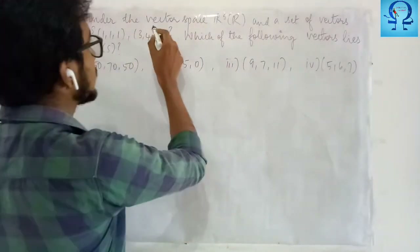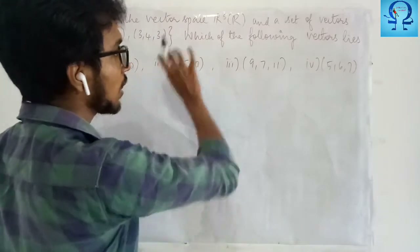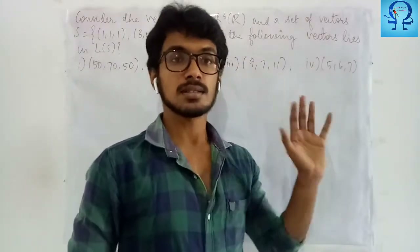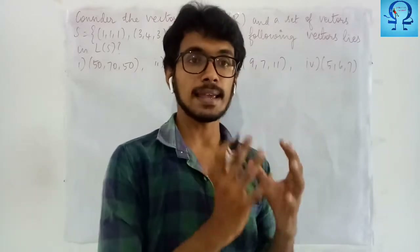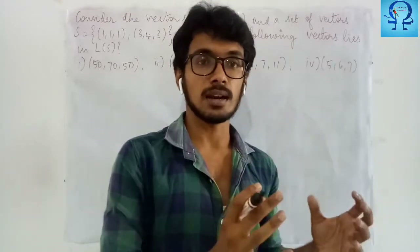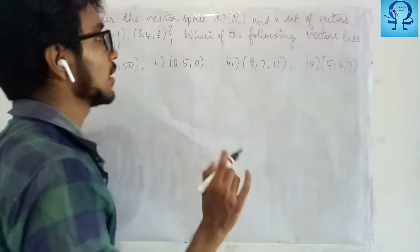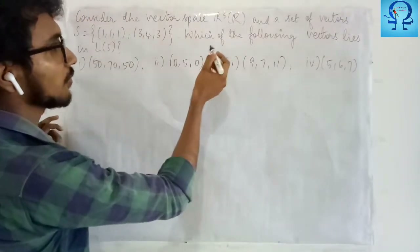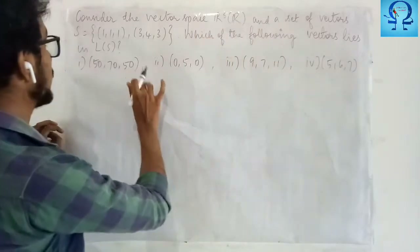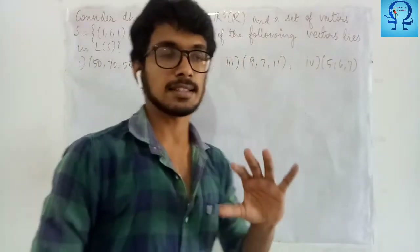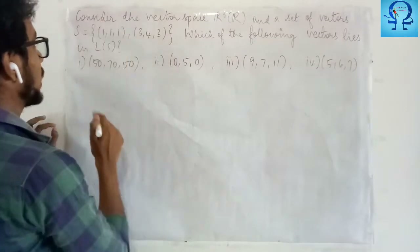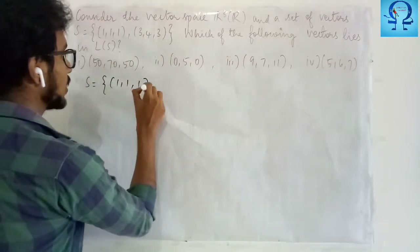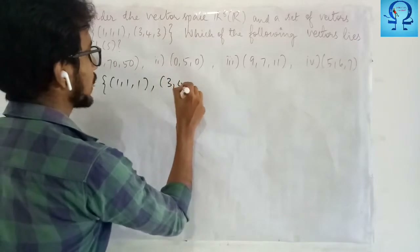We are asked to consider the vector space R3 over R. Scalar multiplication and vector addition are not specified, which means we are taking them in the usual sense. We are given two vectors and asked to find out which of the following vectors lies in the span of this set. Let us try to find what is the span of this set, given S is the set consisting of these two vectors.